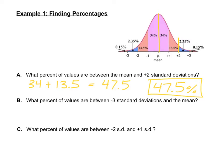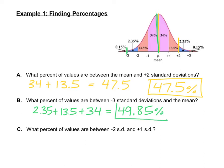What percent of the values are between negative three standard deviations and the mean? Negative three standard deviations is on the far left side. We just add together the sections between those two points: 2.35%, 13.5%, and 34%. Adding those together gives us 49.85%.